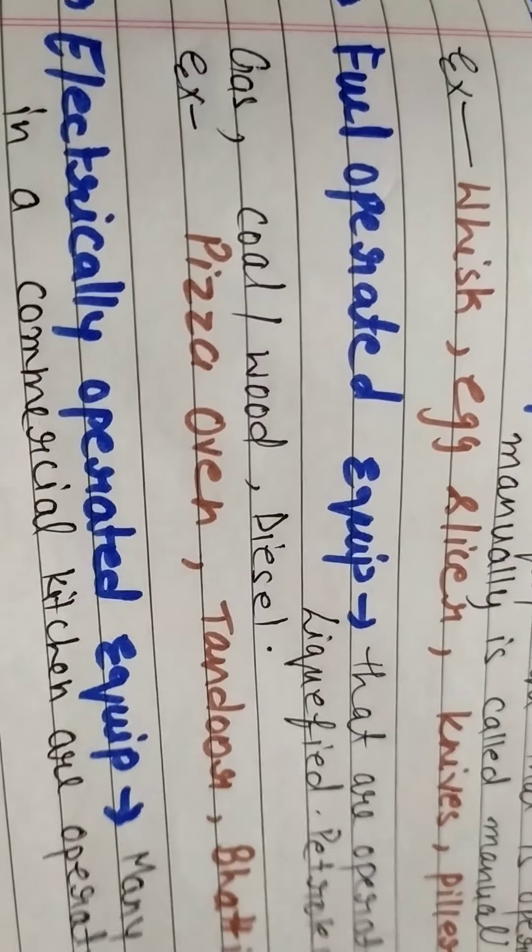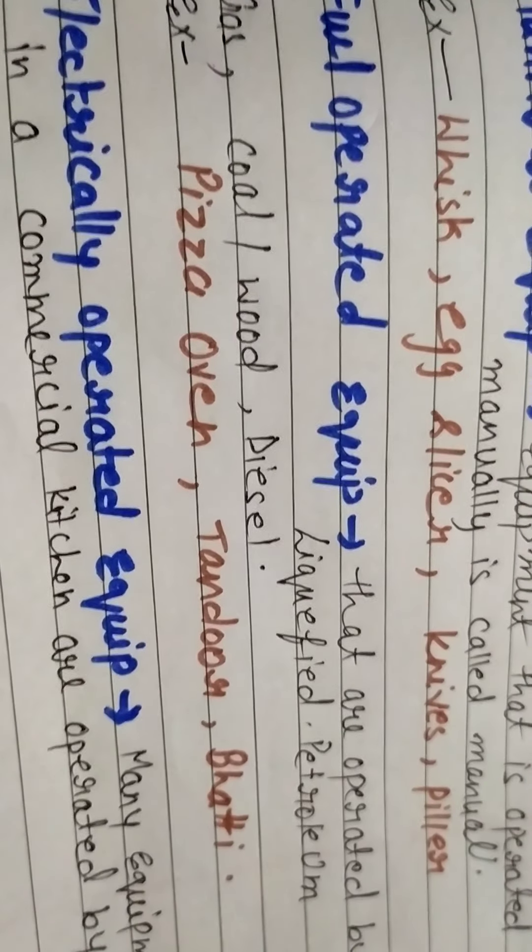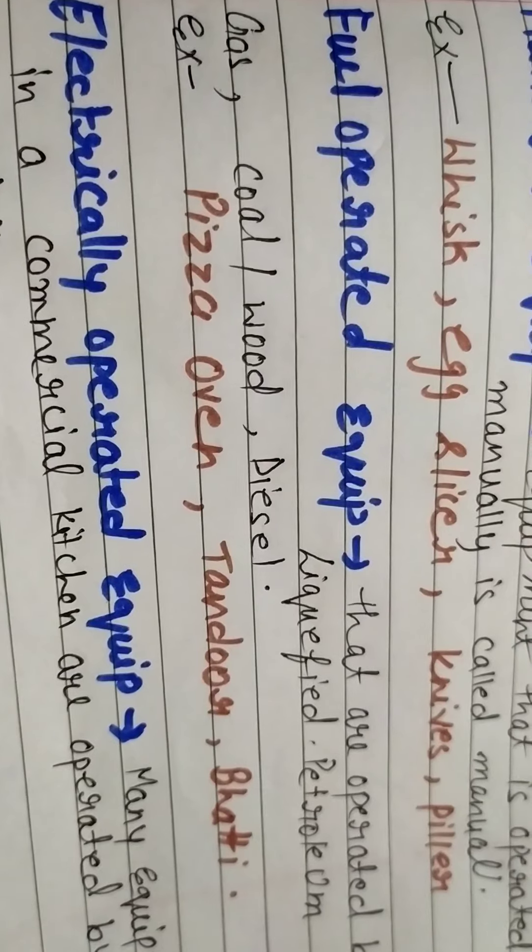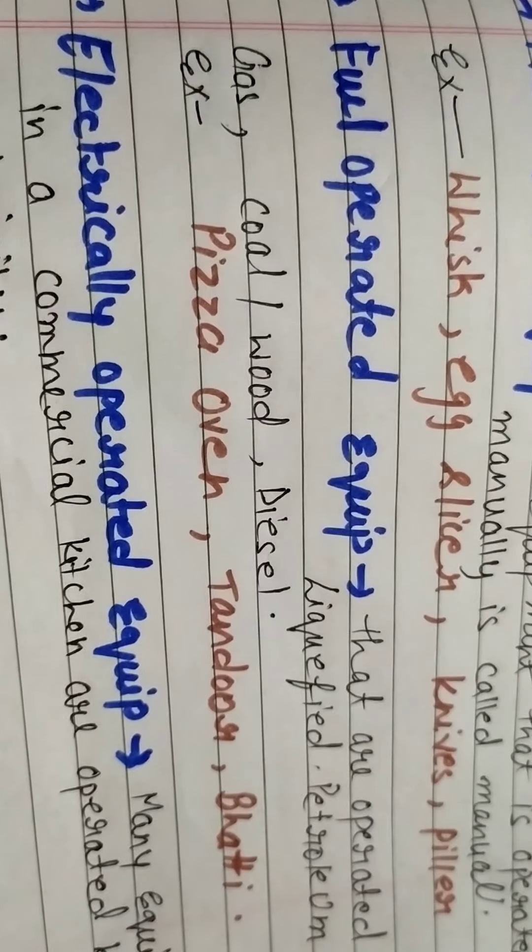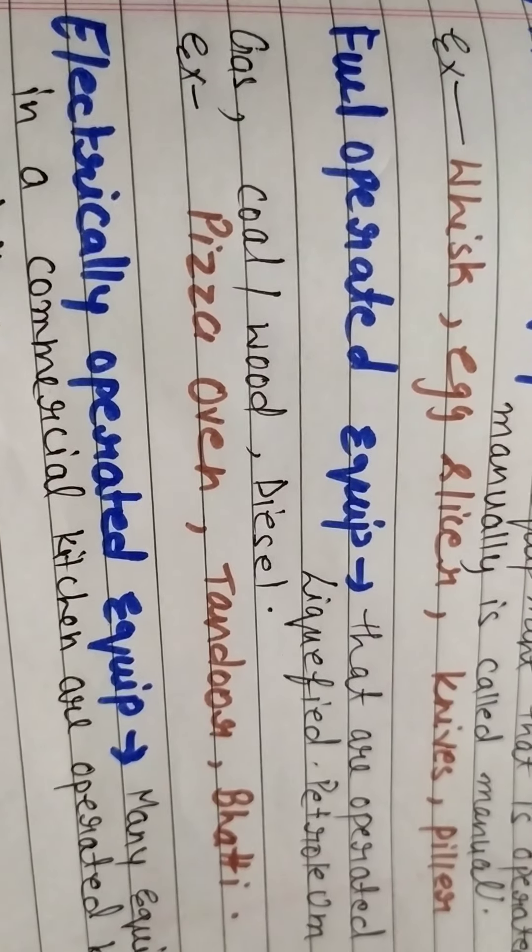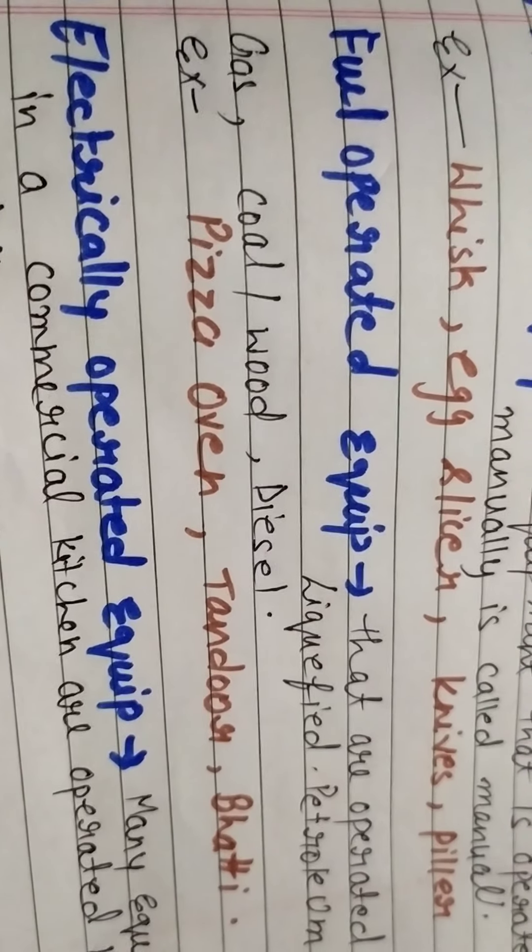Next, fuel operating equipments that are operated by fuel: petroleum, gas, coal, wood, diesel, etc. Examples include pizza oven, tandoor, bhatti.